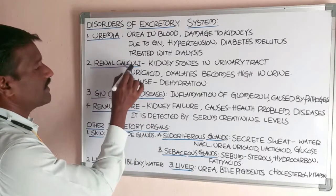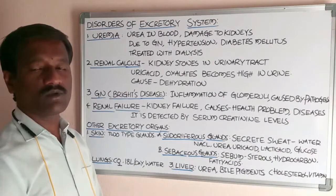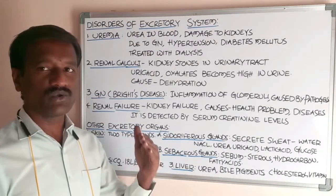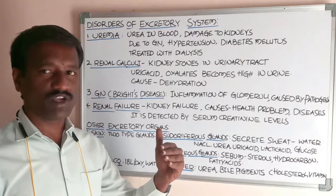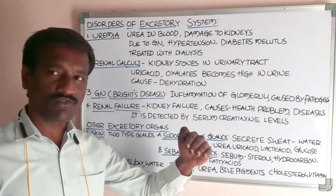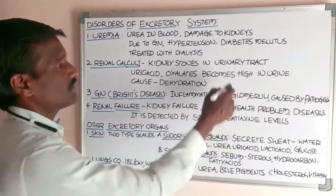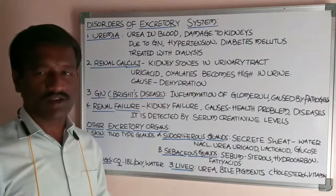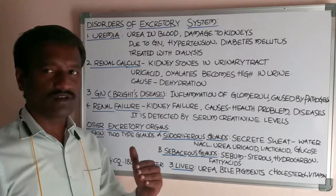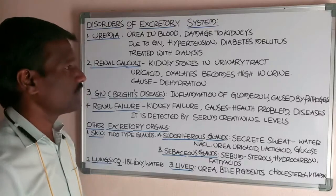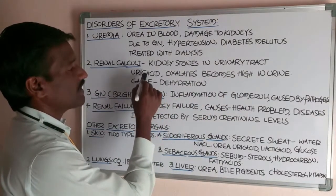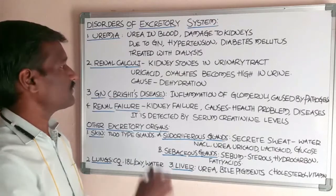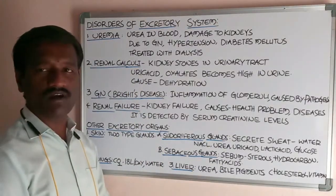The second disorder is renal calculi, which means formation of stones in the urinary tract. The urinary tract is the region through which urine flows. Renal calculi occur when high amounts of uric acid and oxalate levels are present in the urine, causing the formation of kidney stones.